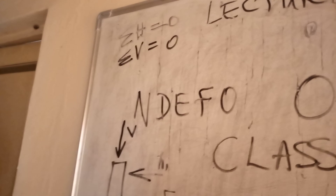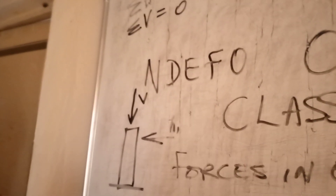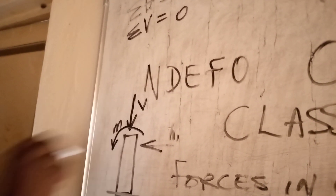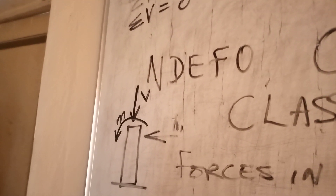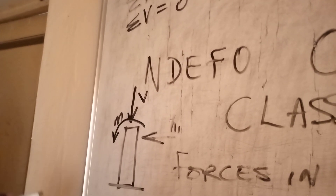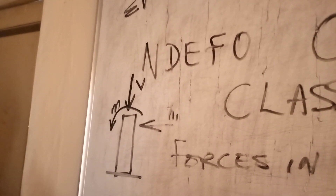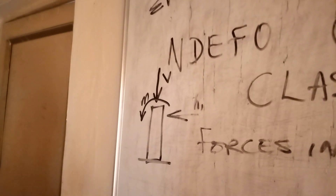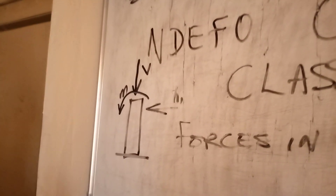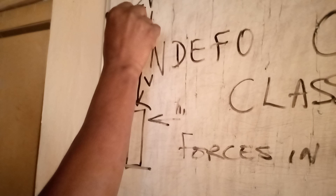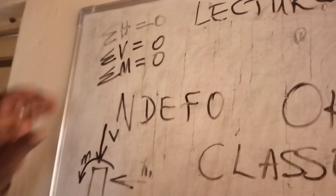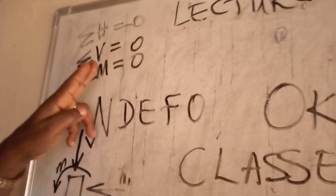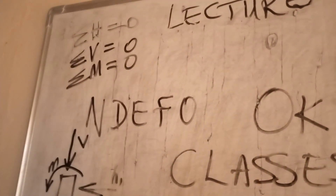If the object is bent and it refuses to bend, that means the moment that is bending it is equal to its own resistive moment. Since the two moments are in different directions, the total moment is equal to zero. So we now have three equations: total horizontal force equals zero, total vertical force equals zero, and total moment equals zero.